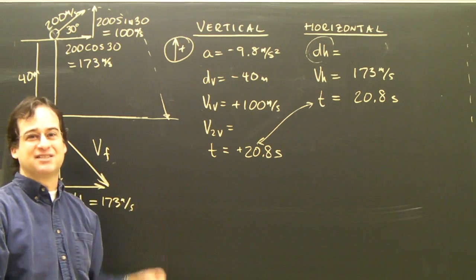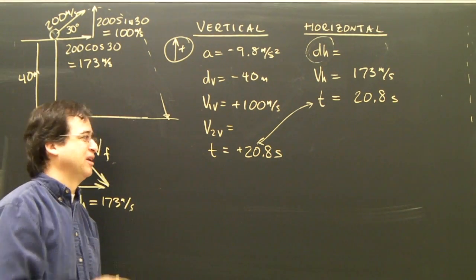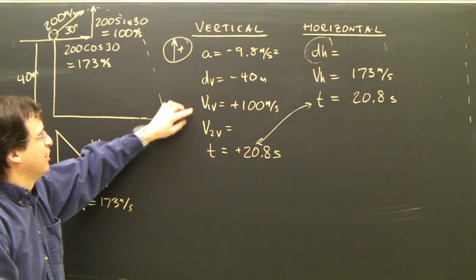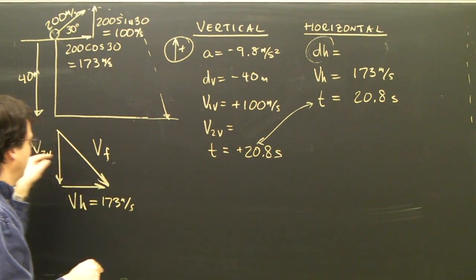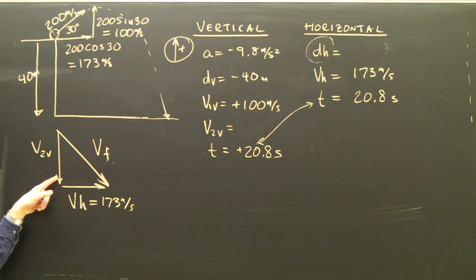In the vertical though, it's accelerating. It's going up and going down. As a result, the initial vertical velocity was 100 meters per second up, but when it impacts the ground, it's going to be this down. So how do I calculate that?